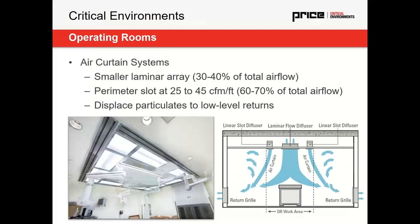Air curtain systems use a slightly different design. We still need to maintain that 70% table coverage — regardless of what system design we're using, that ASHRAE requirement still needs to be met. The difference is how we supply the extra airflow to the space after meeting the 70% coverage. We still need to meet that 20 air changes minimum. For the additional airflow in an air curtain system, we supply it through a perimeter slot or a perimeter horn diffuser.